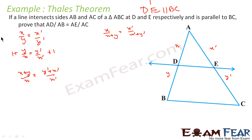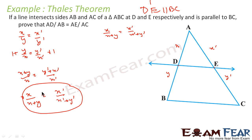Again I will take the reciprocal. This becomes X by X plus Y is equal to X dash by X dash plus Y dash. And that is what we were supposed to prove, because this is nothing but AD by AB is equal to AE by AC. Very simple.